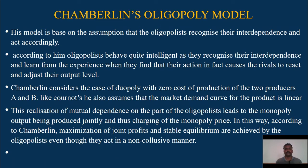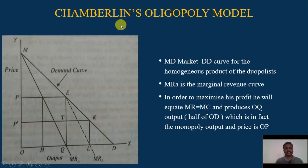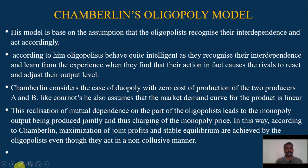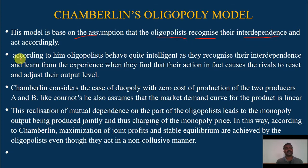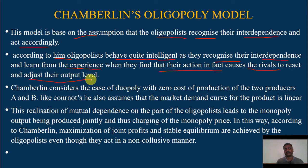Welcome to you all. Today we are going to learn another important oligopoly model of Chamberlain. Now, this model is quite different from the Cournot, Edgeworth, and Bertrand models. According to Chamberlain, oligopolists behave quite intelligently — they recognize their interdependence and learn from experience that their actions cause rivals to react and adjust their output level. This is a very important assumption made by Chamberlain.